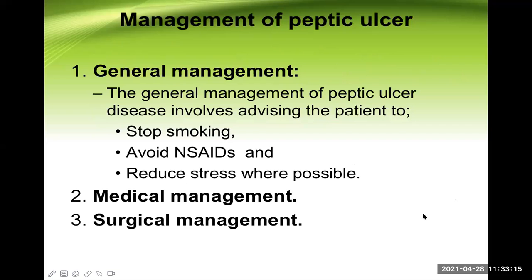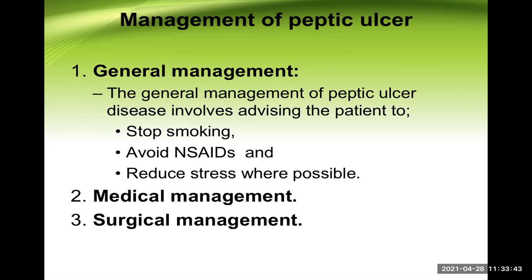The management of peptic ulcer disease is divided into general, medical, and surgical management. General management includes: stop smoking, avoid NSAIDs, and reduce stress where possible. Chronic NSAID use is a definite cause of peptic ulcer. Stress increases hydrochloric acid secretion, mediated by cortisol, so stressful conditions are strongly associated with ulcer formation.